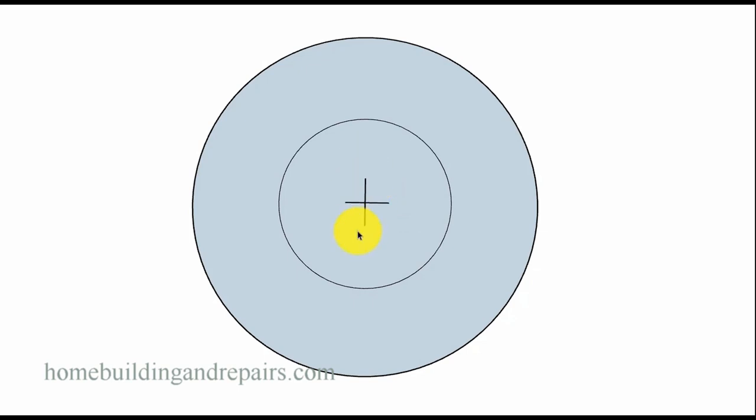We have a center point, which you're always going to need when making curved stairs, some type of a center point somewhere. And we're going to create two circles. This one here has a three foot radius, six foot diameter, and the outside circle has a six foot radius or a 12 foot diameter.